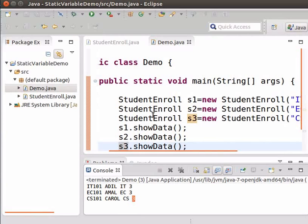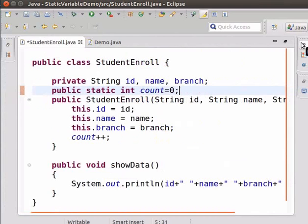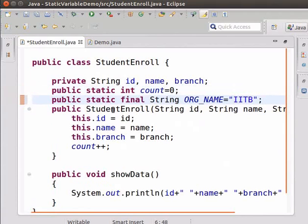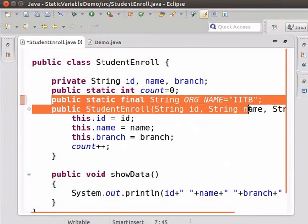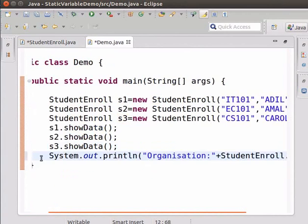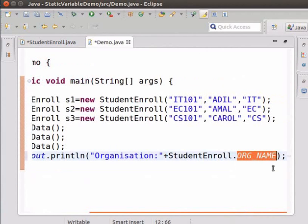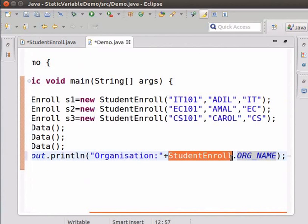Now, come back to Eclipse. Open the student enroll class and type the variable declaration as public static final string ORG underscore name equals IITB. Now, go to the demo class and type the following code. Here, you can see that ORG underscore name is accessed by using its class name student enroll.